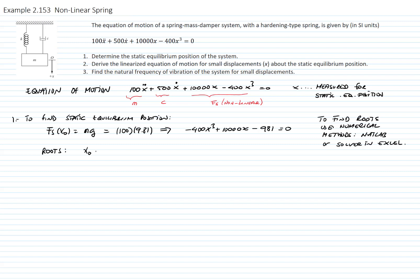The roots are 0.0981, the second root is 4.9502, and the third one is negative 5.0483. We will use the smallest positive root as our static equilibrium position.